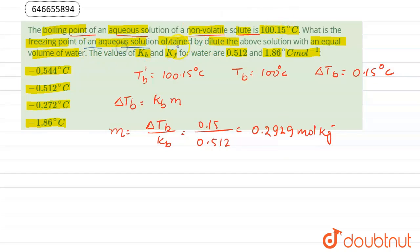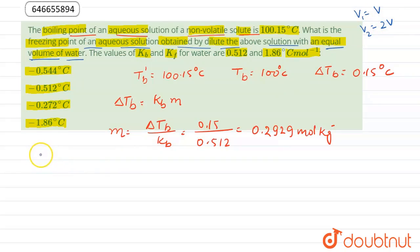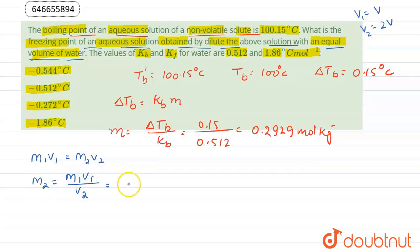Now we have to calculate the freezing point of the aqueous solution obtained by diluting the above solution with an equal volume of water. If the initial volume is V, then the final volume would be 2V because the volume is doubled. We calculate the new molality using the dilution formula: M1V1 = M2V2, giving M2 = M1V1 / V2. Since V1 = V and V2 = 2V, they partially cancel and the new molality is half the original.